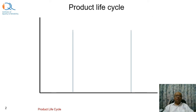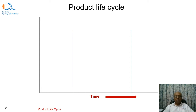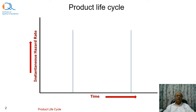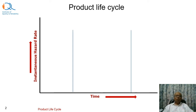In the product life cycle, on the x-axis we have the timeline of product usage. The timeline could be in hours, kilometers, or cycles. And on the vertical axis we have the instantaneous hazard rate or the failure rate. This product life cycle depicts how the hazard rate changes over a period of time during the product usage.